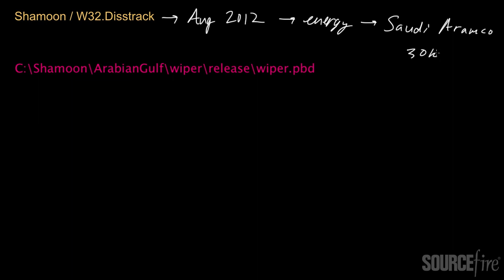It was a highly destructive threat, designed to delete data from systems. When the underlying piece of malware associated with the Shamoon attack was discovered, there was a string in that malware that pointed to a file: C:\Shamoon\Arabian Gulf\wiper\release\wiper.pbd. The term Shamoon in this string is actually why anti-malware vendors decided to name the threat Shamoon.